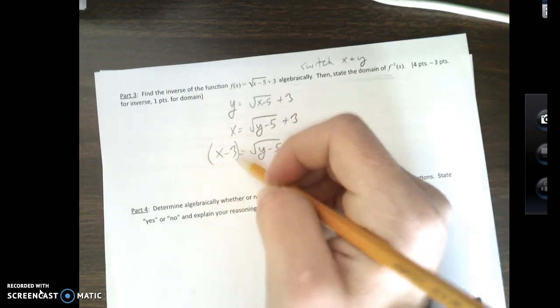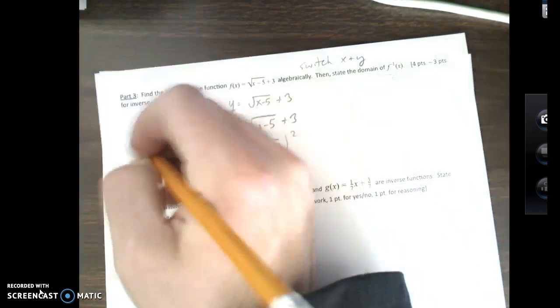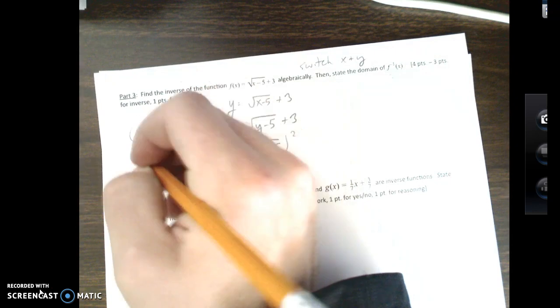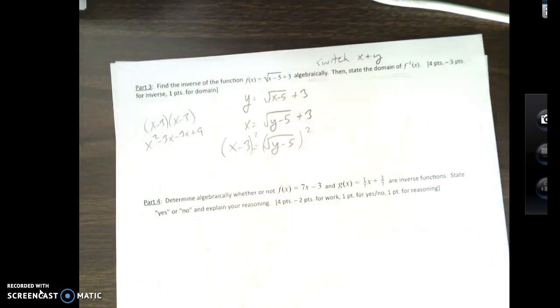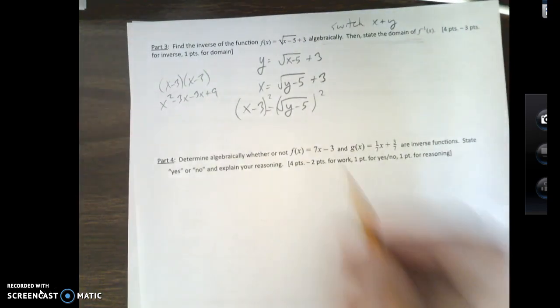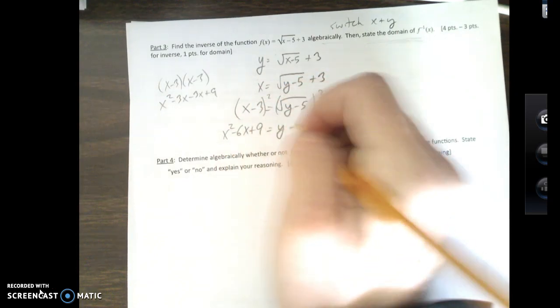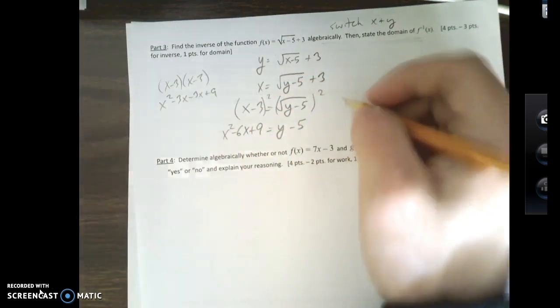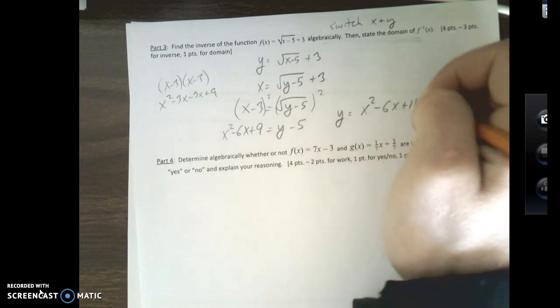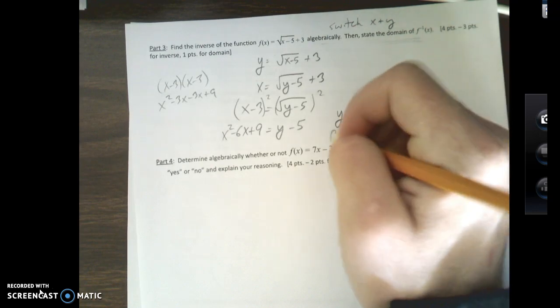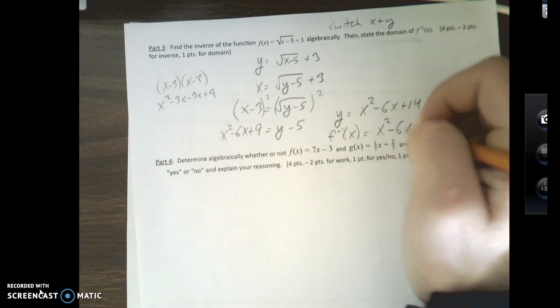I'm going to square both sides. And I want to cancel out the square root. If I FOIL x minus 3, I get x squared minus 3x minus 3x plus 9. Sorry. No. It's kind of hard to see. Ah. Okay. Which ends up giving me x squared minus 6x plus 9 equals y minus 5. So, if I add over the 5, y equals x squared minus 6x plus 14. And finally, we want to write out f inverse of x equals x squared minus 6x plus 14.